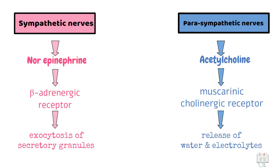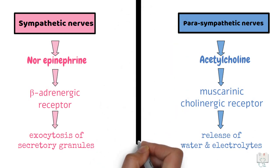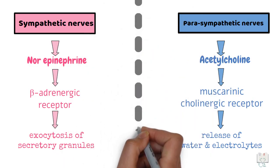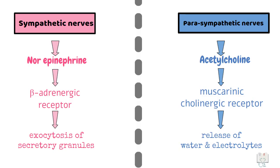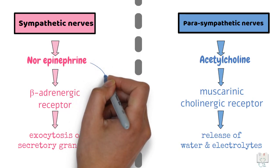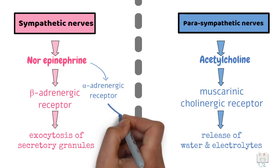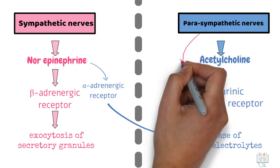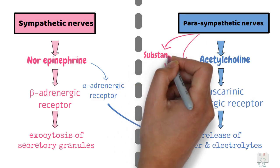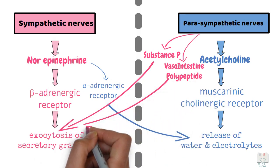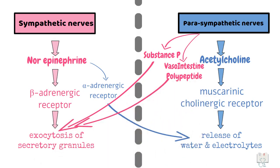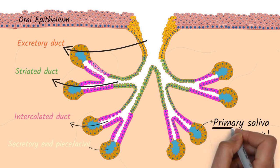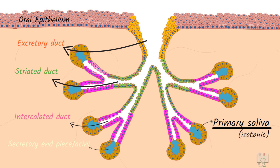However, this division between parasympathetic and sympathetic control of different aspects of secretion is not a clear division but a blurred one. Sympathetic nerves, through norepinephrine, also activate alpha-adrenergic receptors which cause release of water and electrolytes. On the other hand, parasympathetic nerves through vasoactive intestinal polypeptide and substance P cause exocytosis of secretory granules. By these processes, the primary saliva is formed in the lumen of the salivary acini.